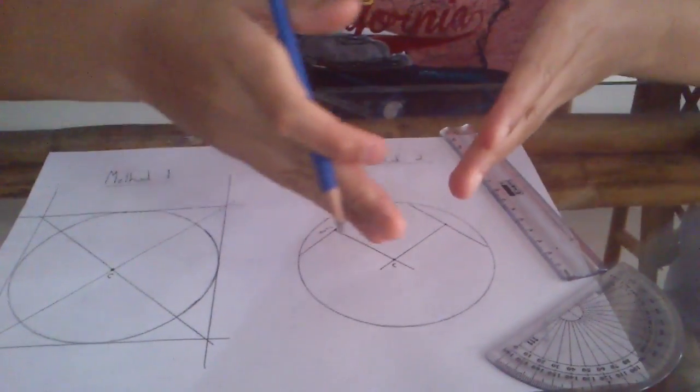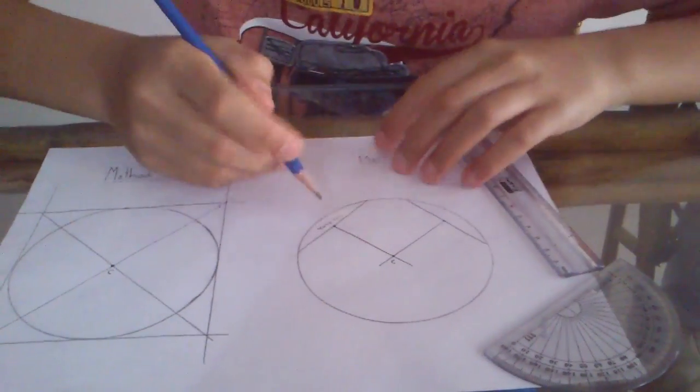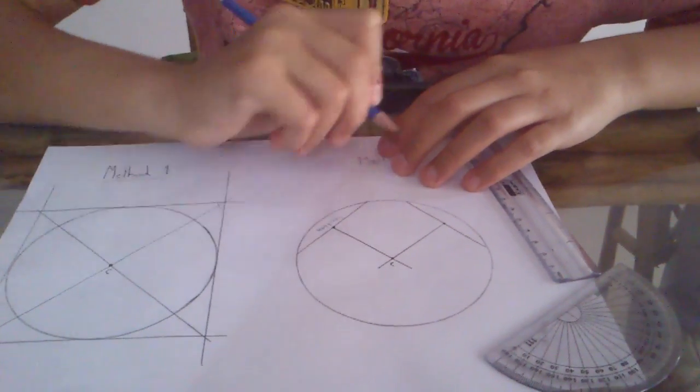So when you make two chords and you cut a line through them, they will always pass through the center, thus giving you the center of the circle.